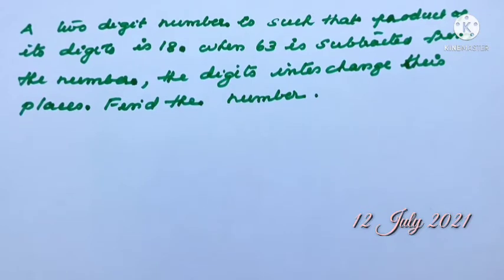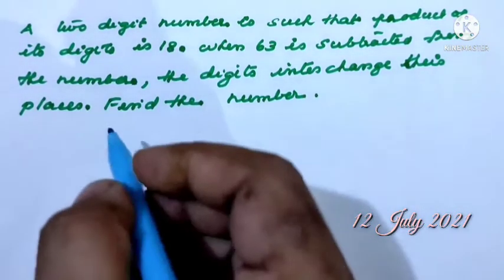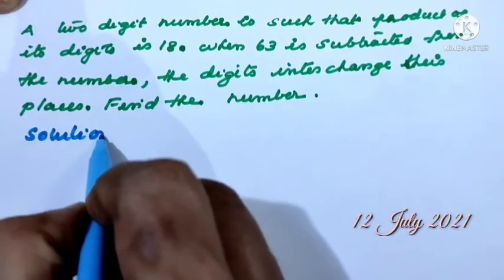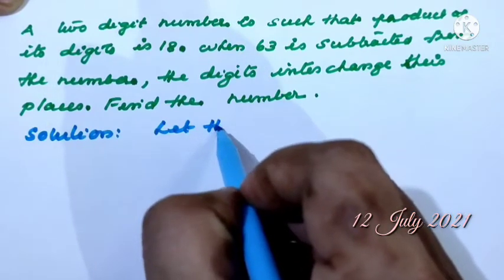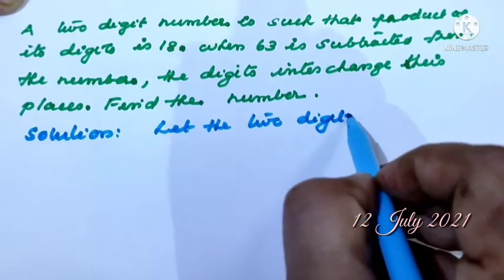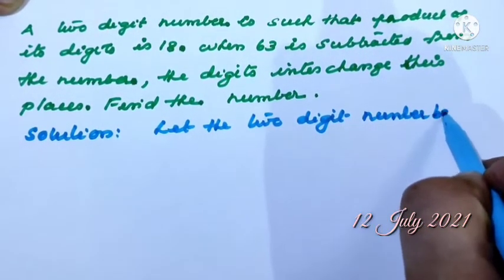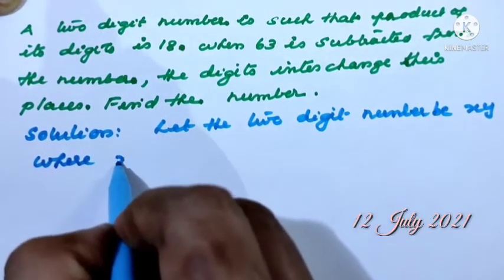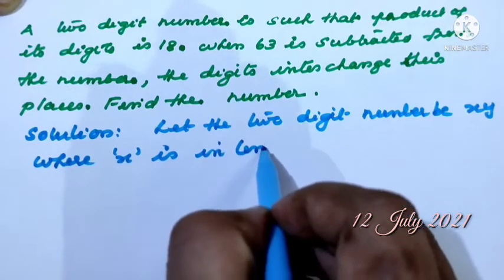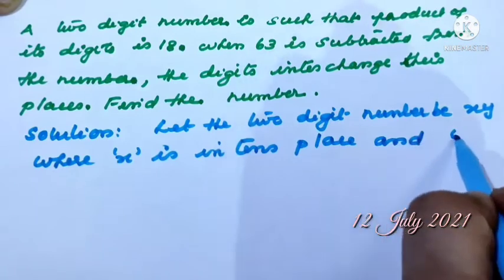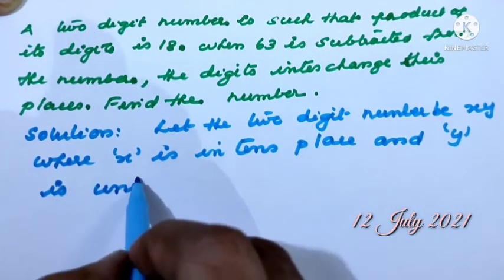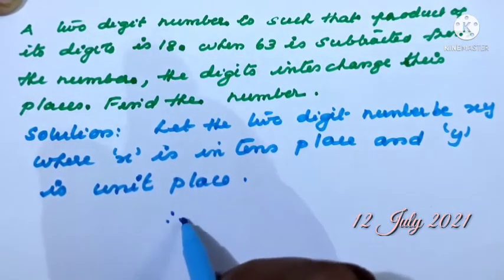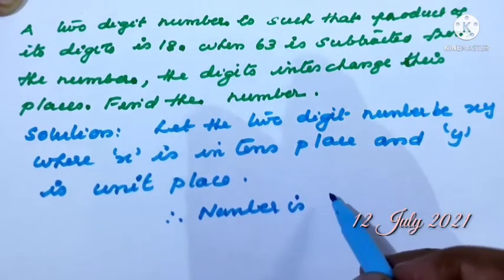Next problem: A two-digit number is such that the product of its digits is 18. When 63 is subtracted from the number, the digits interchange their places. Find the number. We have to write some introductory steps. Let the two-digit number be XY, where X is in the tens place and Y is in the units place. Therefore the number is 10X plus Y.